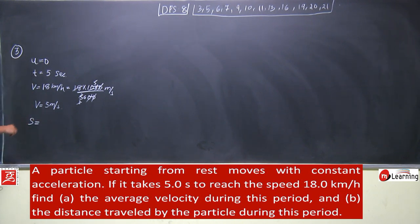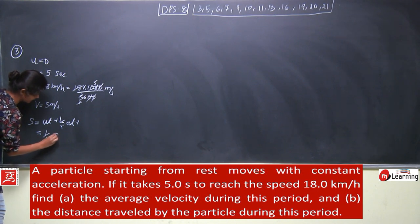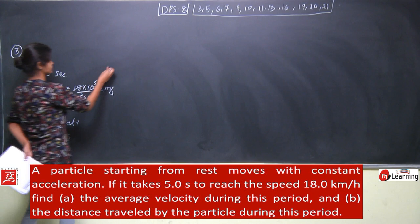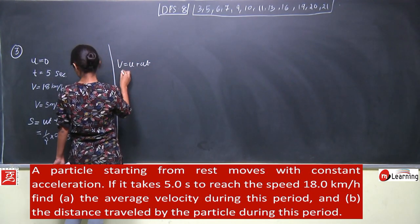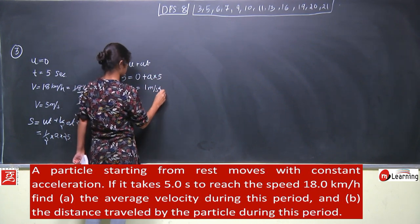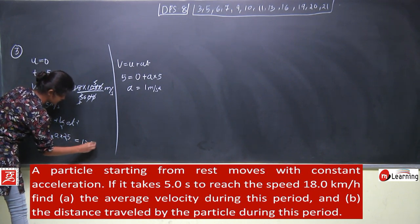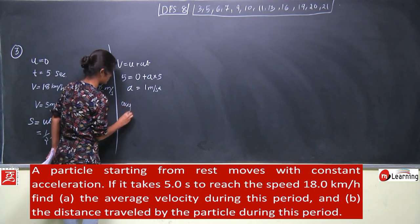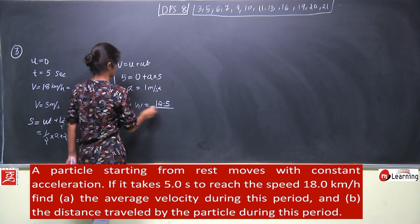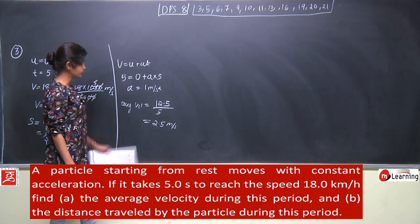First we will calculate the distance. S is equal to ut plus half a t squared. U is 0, so S equals half into a into t squared, that is 25. We need to calculate a using v equals u plus at: 5 equals 0 plus a into 5, so a equals 1 meter per second squared. Therefore S equals half into 1 into 25, that is 12.5 meter. Average velocity is total displacement divided by total time taken: 12.5 divided by 5 equals 2.5 meter per second.